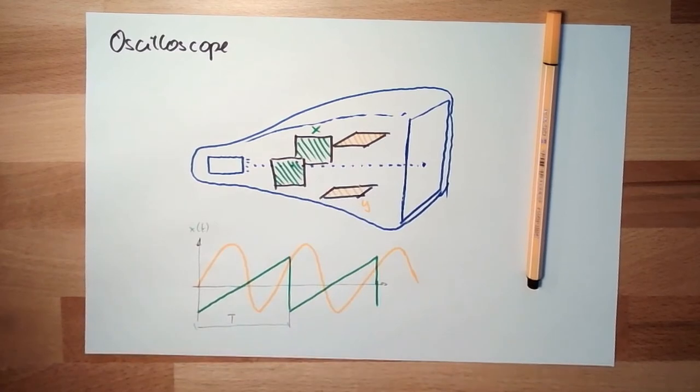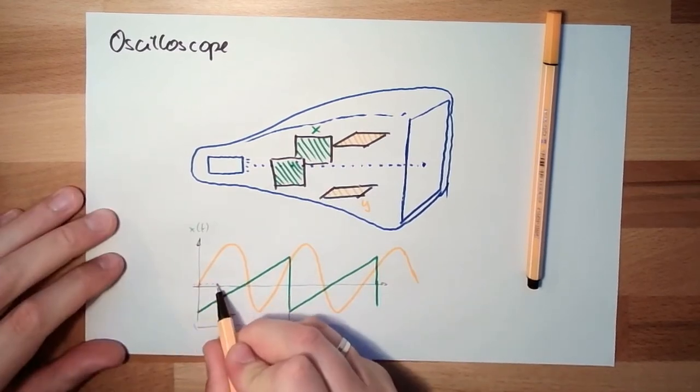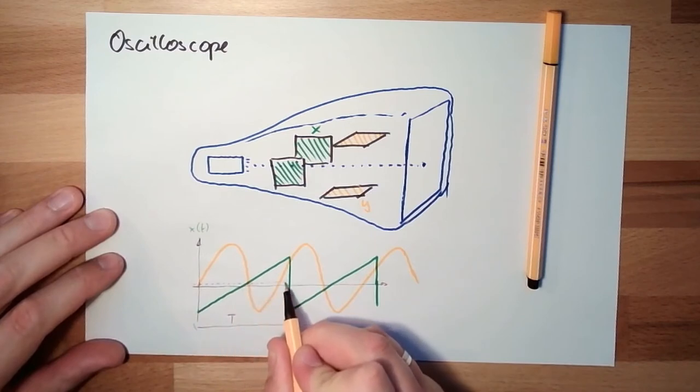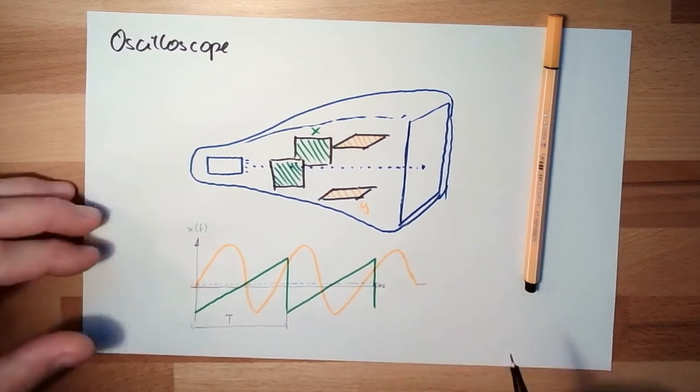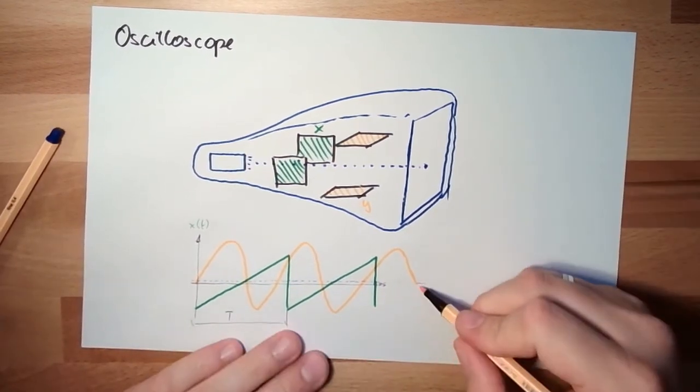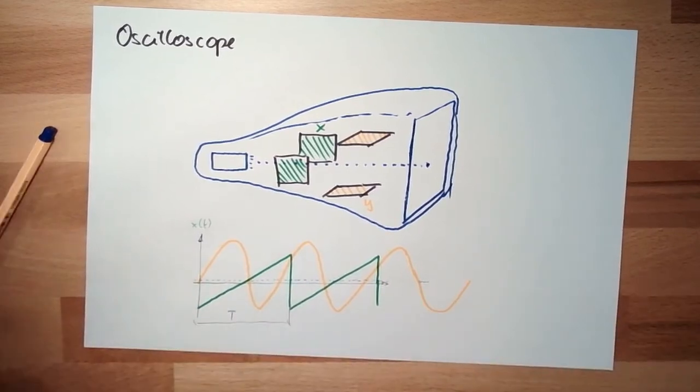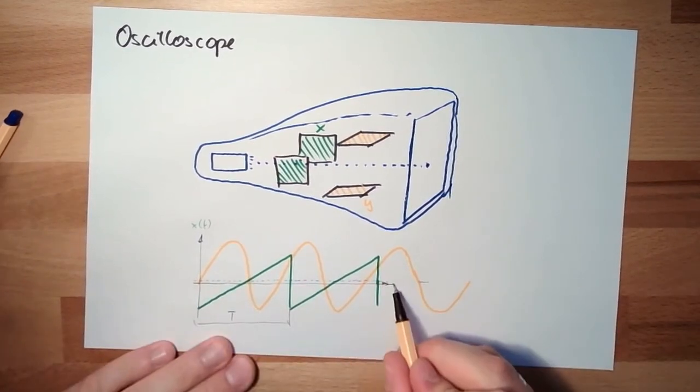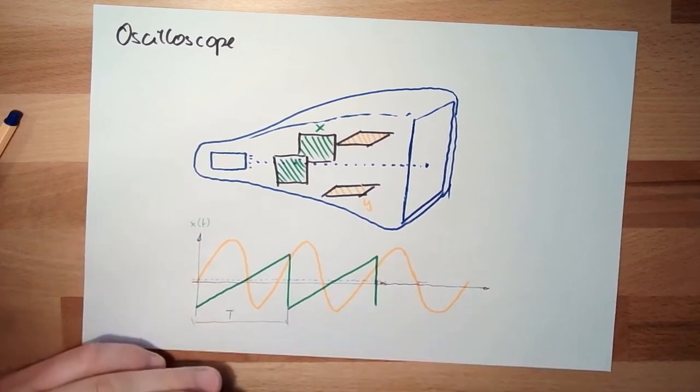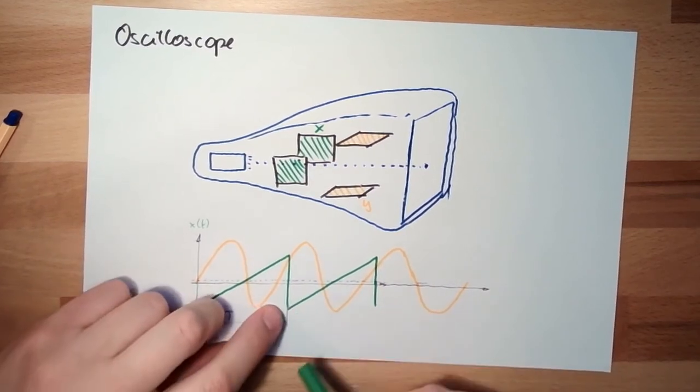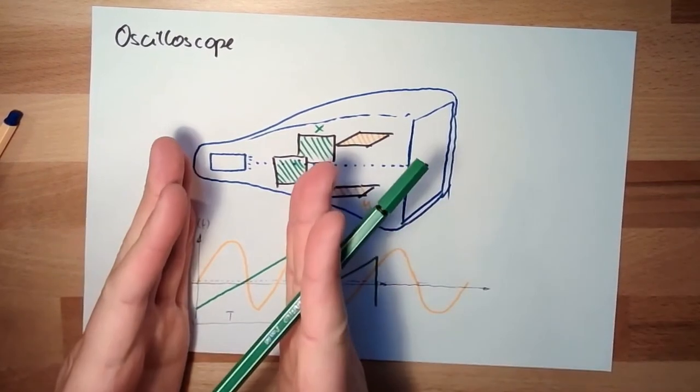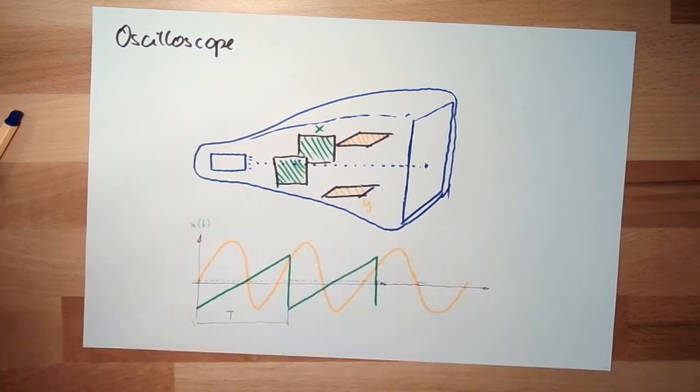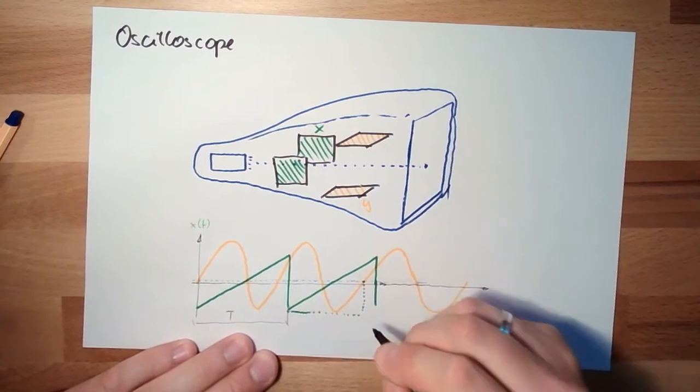This is why I usually can adjust a trigger level. And every time this trigger level is met on the positive side, then this triggers this refresh here. So if I adjust here a trigger level, I will see this. Then it will stay on the other side. And here it will be triggered again.